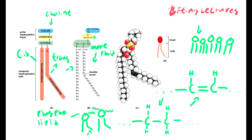To recap: if we have unsaturated double bonds, we can move around because we are further apart from each other, making the membrane fluid. Also, if you compare a 16-carbon fatty acid to a 14-carbon fatty acid, and both are saturated, the 14-carbon one is more fluid — the fewer carbons, the more fluid; the more carbons, the more rigid.